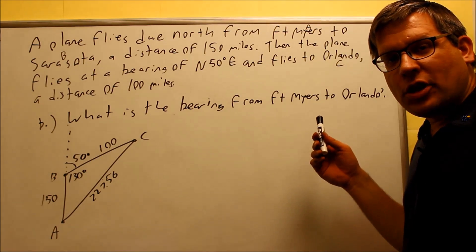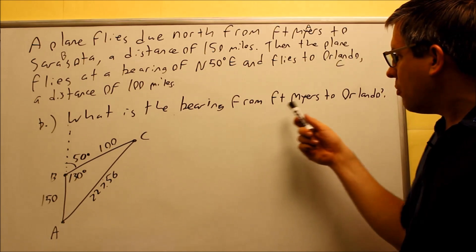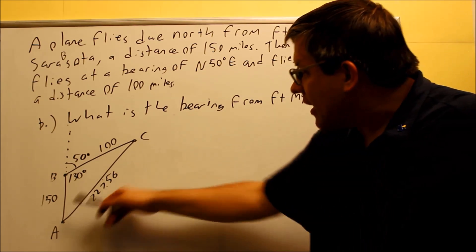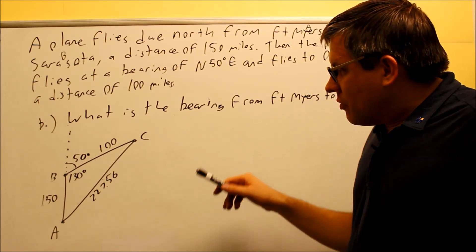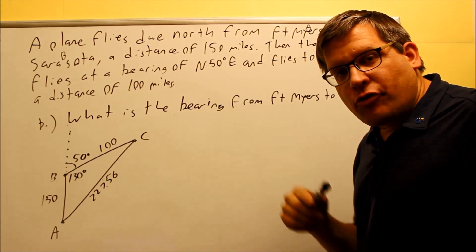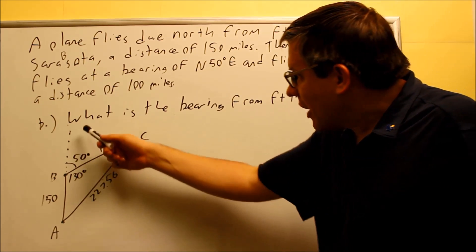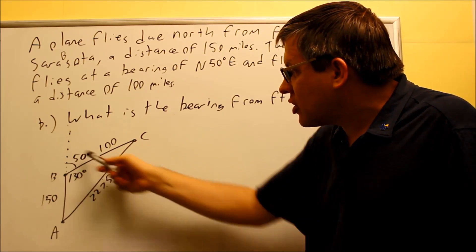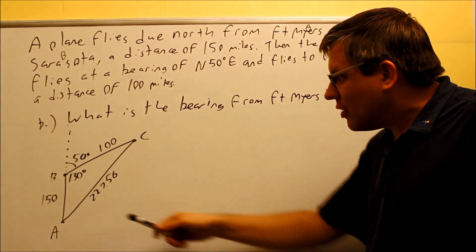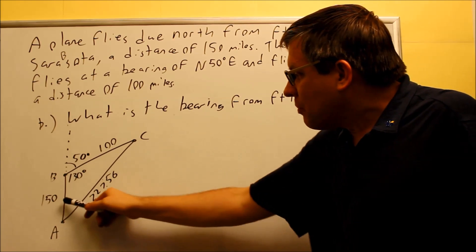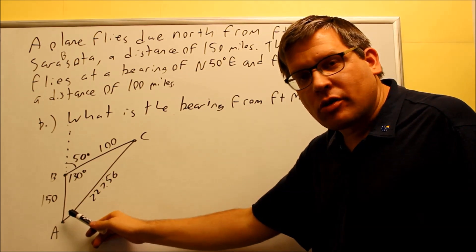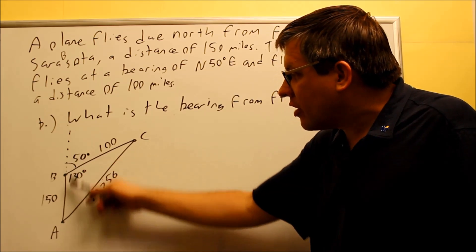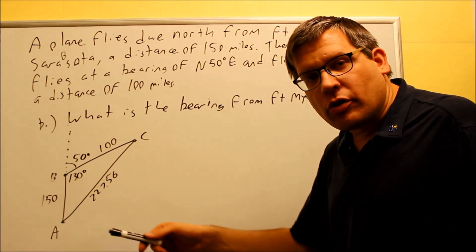Okay, now for part B. Part B says, what is the bearing from Fort Myers to Orlando? That's from A to C. So bearings are always measured from the north or the south. That was the case when we did north 50 degrees east, we had to put that dotted line there and it's measured from there. In this case, if we go from A to C, the bearings have been measured from the north here also, but we notice that one side of the triangle is already perfectly north. So therefore,